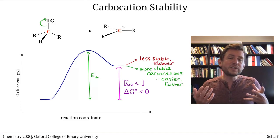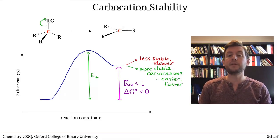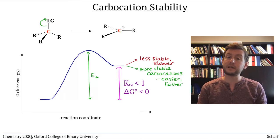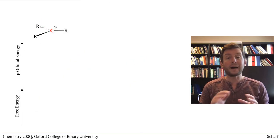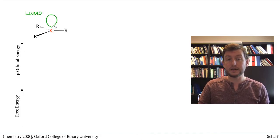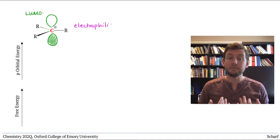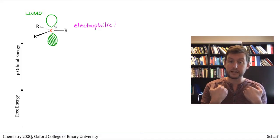To understand carbocation stability, we need to think about the relevant frontier molecular orbital. By definition, a carbocation has an empty P orbital as its LUMO. It's an excellent electrophile and behaves by accepting electrons.